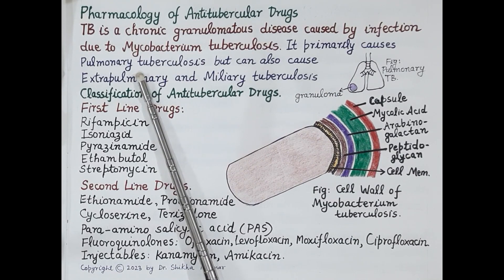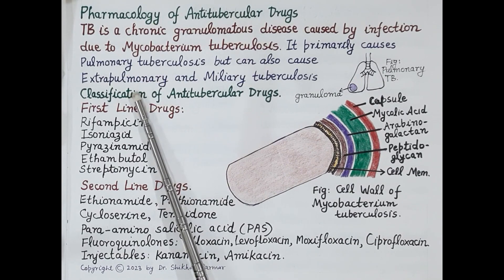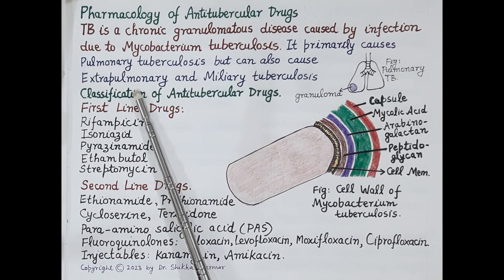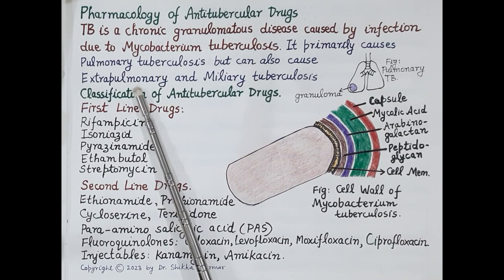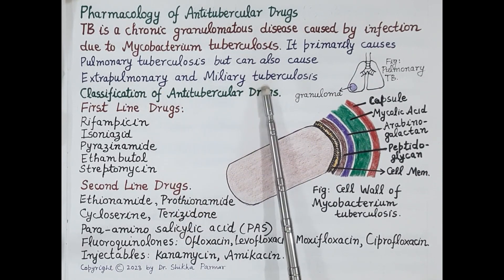This disease primarily affects the lungs and is therefore known as pulmonary tuberculosis. When it affects organs other than lungs — such as joints, bones, central nervous system, or genitourinary tract — it is termed extra-pulmonary tuberculosis. If the bacteria infects the blood, the infection spreads throughout the body, becomes life-threatening, and is then termed miliary tuberculosis.